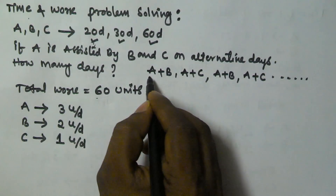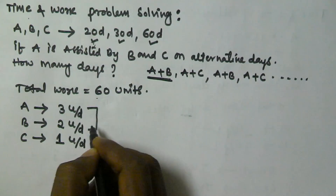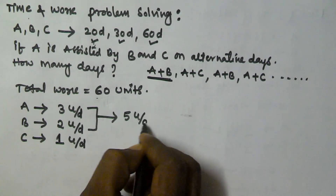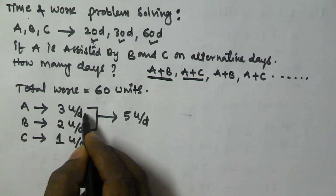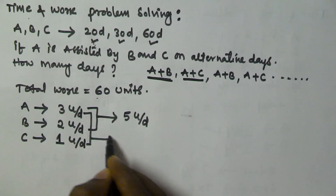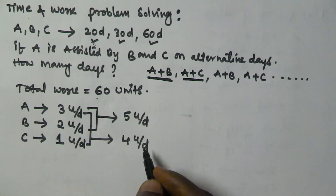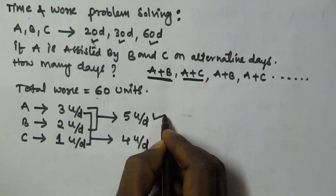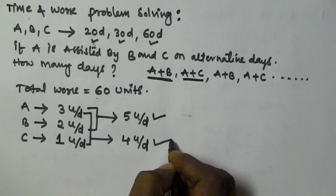On the first day A and B together will work, so A and B together are going to finish 5 units per day. On the second day A and C will work, so A and C together are going to finish 4 units per day. That means on the first day A and B will finish 5 units, and on the second day A and C will finish 4 units.